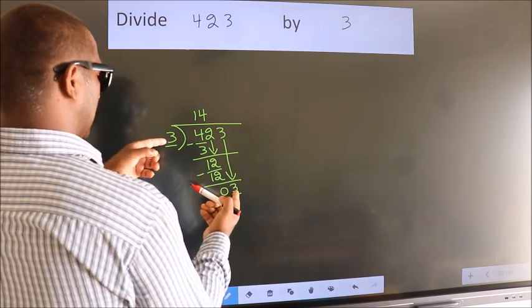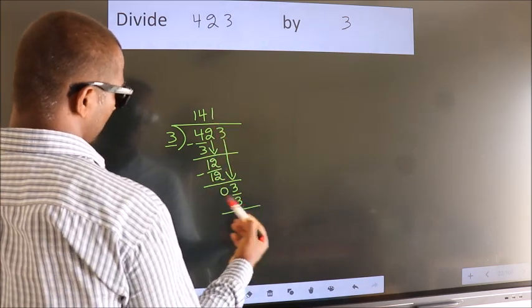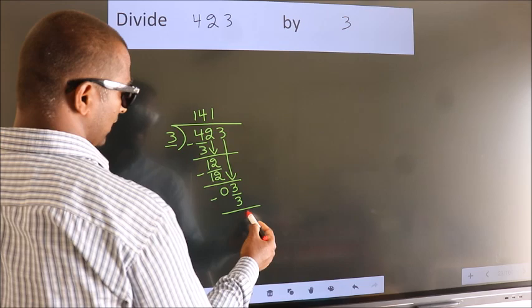When do we get 3 in the 3 table? 3 ones, 3. Now we subtract. We get 0.